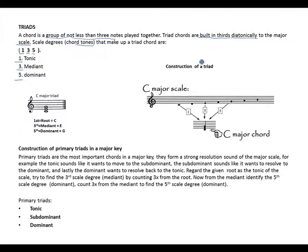Let's look at the construction of a triad. The first degree has been given to us — C, which is the first degree. Now we're counting in thirds. Since a triad means three, building in thirds: 1, 2, 3 to find our third degree. Count in thirds again from your third degree to find your fifth degree: 1, 2, 3. There's the fifth degree.